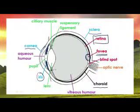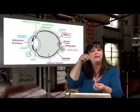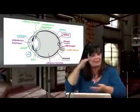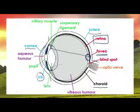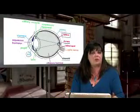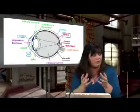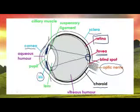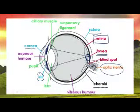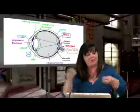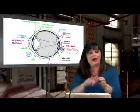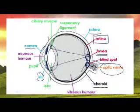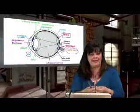Right in the front, we've got the lens. The lens is able to be pulled thinner or squashed a little bit flatter, and that helps us to focus on what we're seeing. The job of the lens is to focus everything onto the fovea — that's where most of our receptor cells are. Then we have the optic nerve that collects all that information from the retina and sends it off to the brain. Where the optic nerve exits the eye, there are no receptors — and that is what's called your blind spot, because there's nothing there that can detect light.